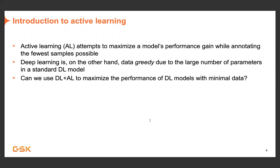The goal is to maximize model performance gain while annotating the fewest number of samples possible. You have a relatively small training set you've trained your model on, and then a pool of unlabeled data. In the active learning scenario, the question is: how do I pick data from that unlabeled pool to add to my training set that will most improve the performance of my model?